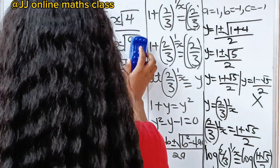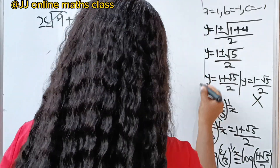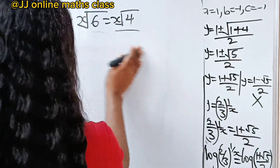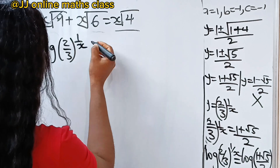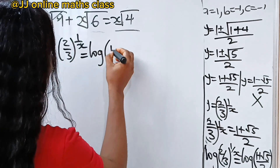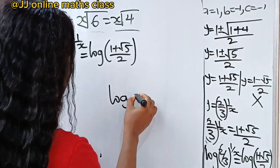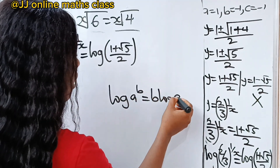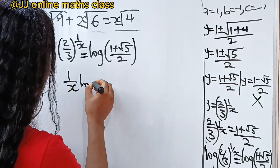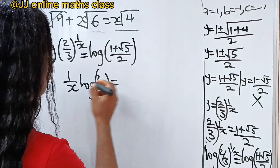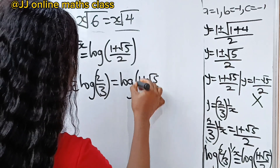Now let's take the logarithm of both sides of this equation. We have log of 2 over 3 to the power of 1 over x, is equal to log of 1 plus root 5 over 2. Using the power rule — which states that log a to the power of b is the same as b times log a — we can rewrite the left side as 1 over x times log of 2 over 3, is equal to log of 1 plus root 5, divided by 2.